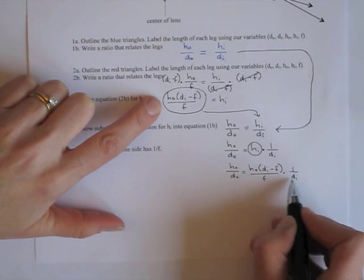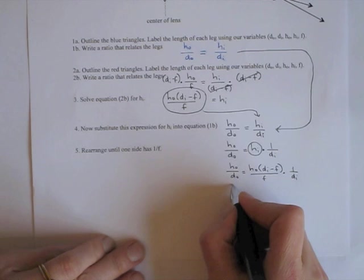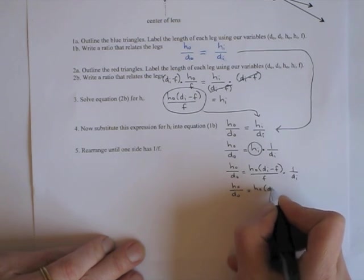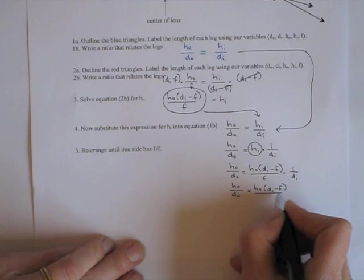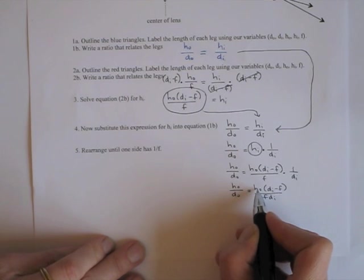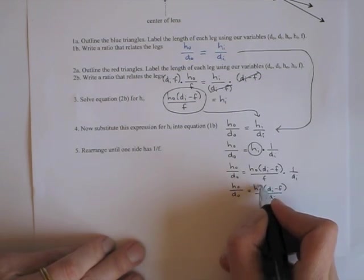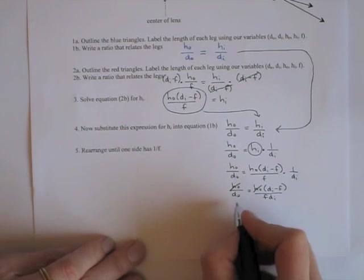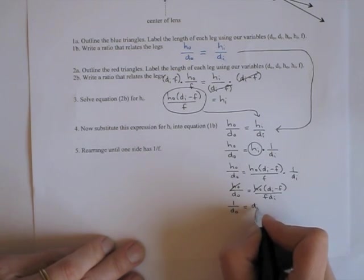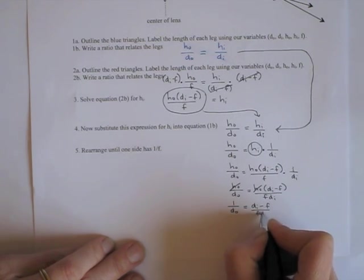I'm going to combine the denominators, multiply them together. HO over DO equals HO times DI minus F over FDI. Do you see anything that is the same on both sides that we could cancel out? I'm noticing we have an HO on both sides on the top. So if I divide both sides by HO, those will cancel. And then I'll have 1 over DO equals DI minus F over FDI.